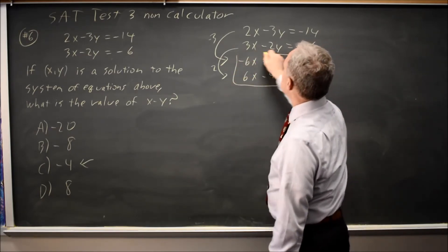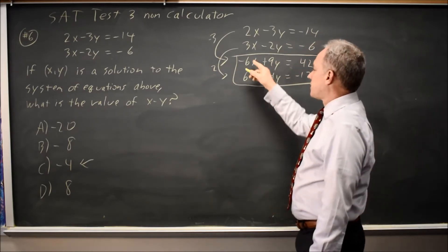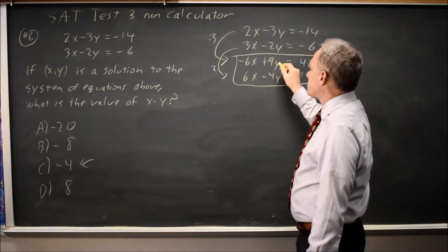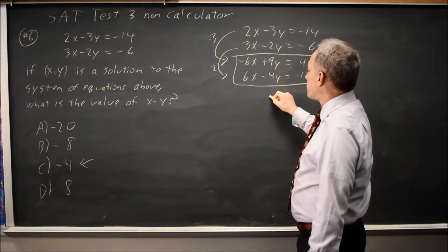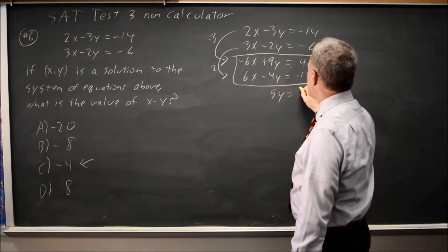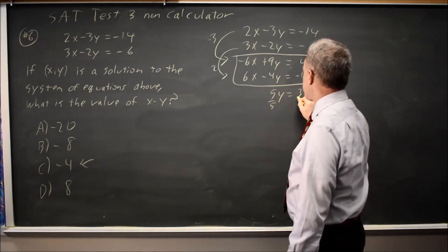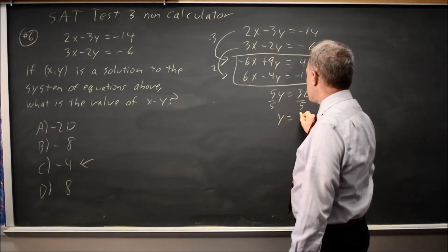If I combine these two equations, negative 6x plus 6x is 0x. 9y minus 4y is 5y. 42 minus 12 is 30. y equals 6.